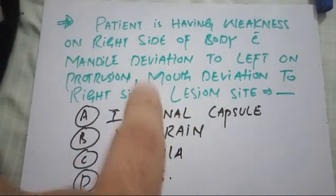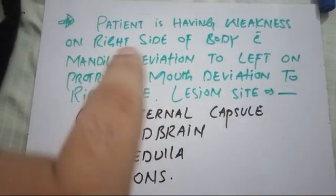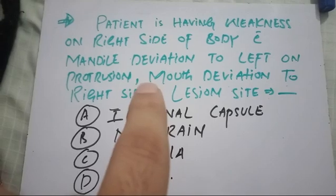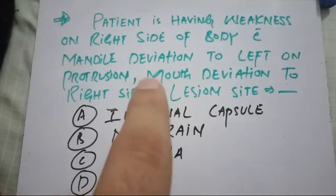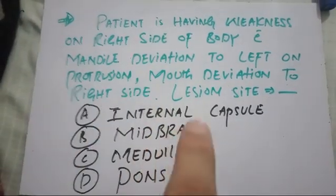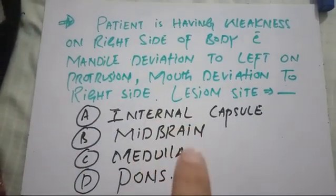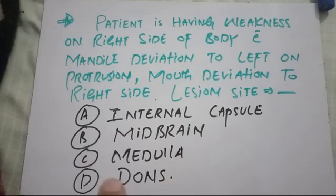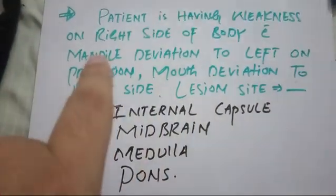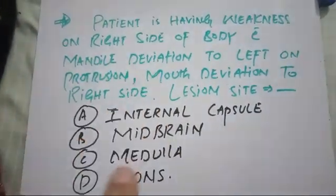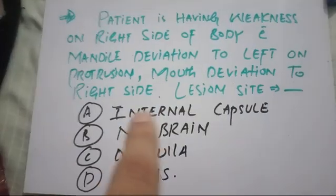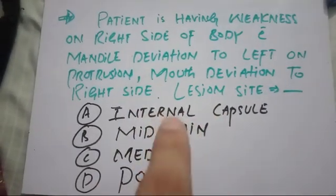Mouth deviation to the right means the seventh nerve is also involved. Both the fifth and seventh nerves lie in which region of the brainstem? Not the midbrain, not the medulla — yes, the pons. This is pointing to a pontine stroke. Mandibular deviation occurs in pontine stroke. It is not the internal capsule, because in the internal capsule we have weakness of the body with facial nerve palsy.